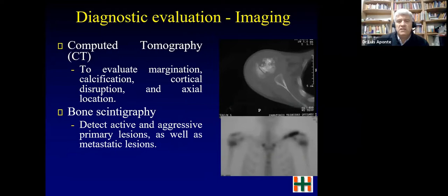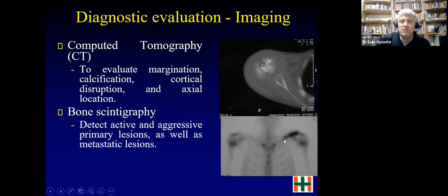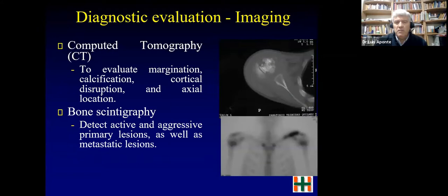CT is mainly used to evaluate calcification or disruption of the cortex. The bone scan is very helpful when pain is present without an obvious source, as it can localize the tumor. For example, a tumor in the clavicle may cause diffuse shoulder pain, and the bone scan can identify the primary lesion. It is very useful for non-focal pain.